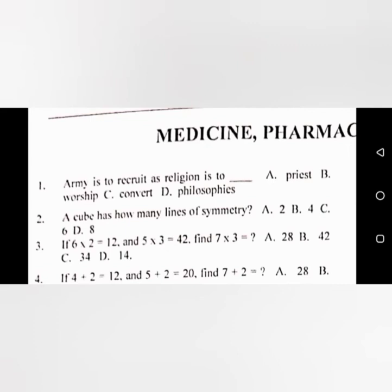The first question is for pharmacy and medical students. Question two says: a cube has no line of symmetry — a cube doesn't have a line of symmetry, it has a plane of symmetry. So the line of symmetry of a cube is zero.